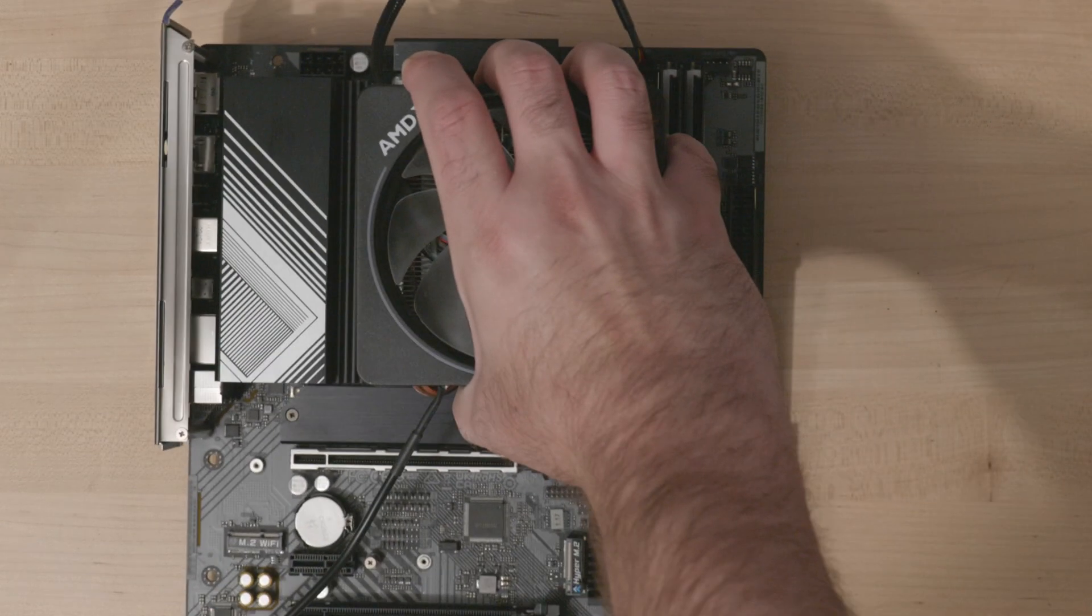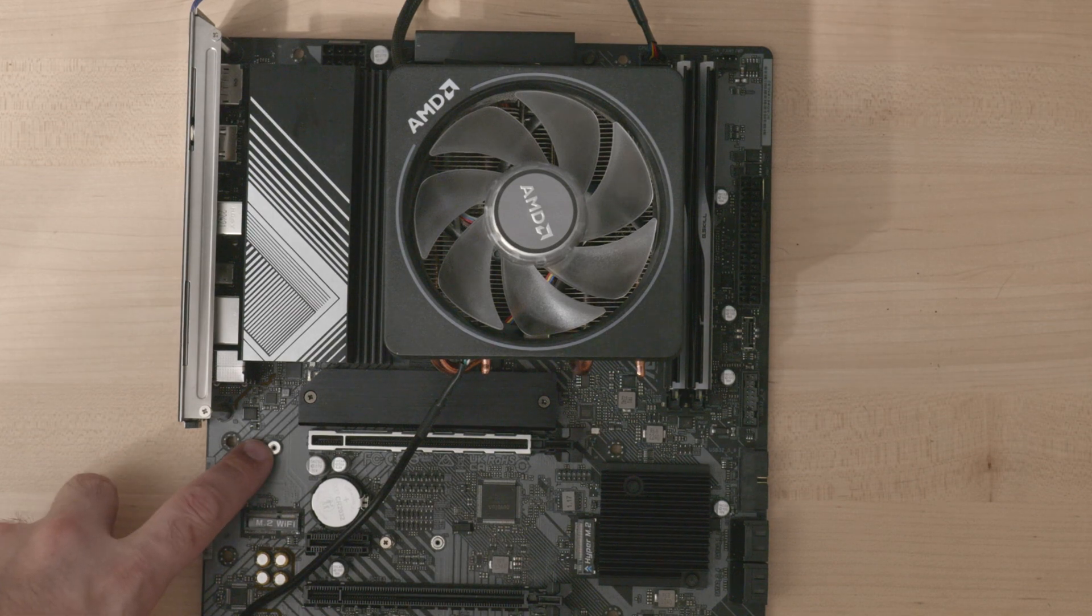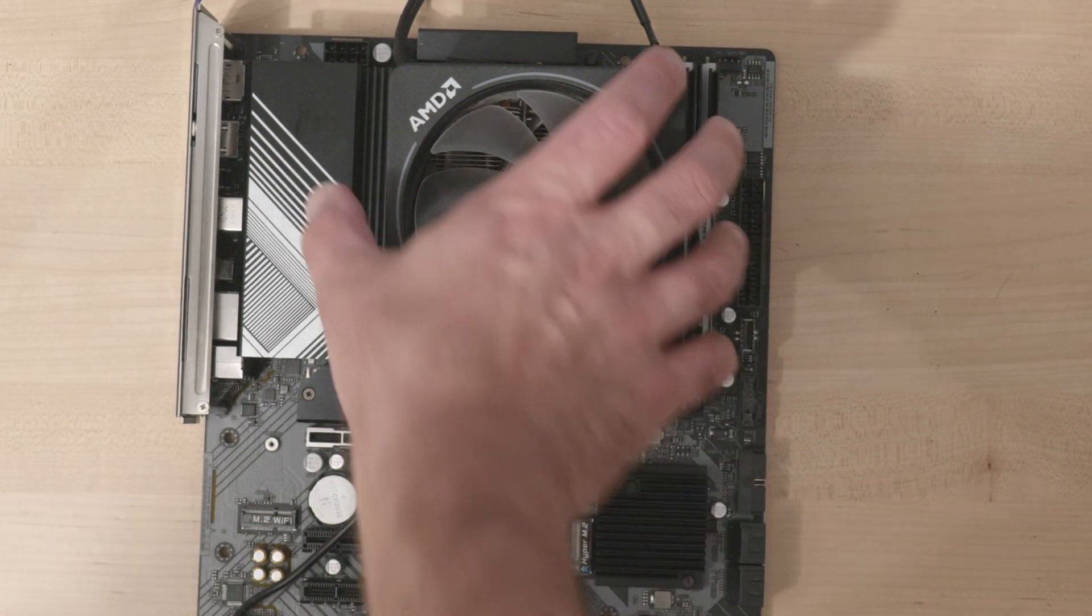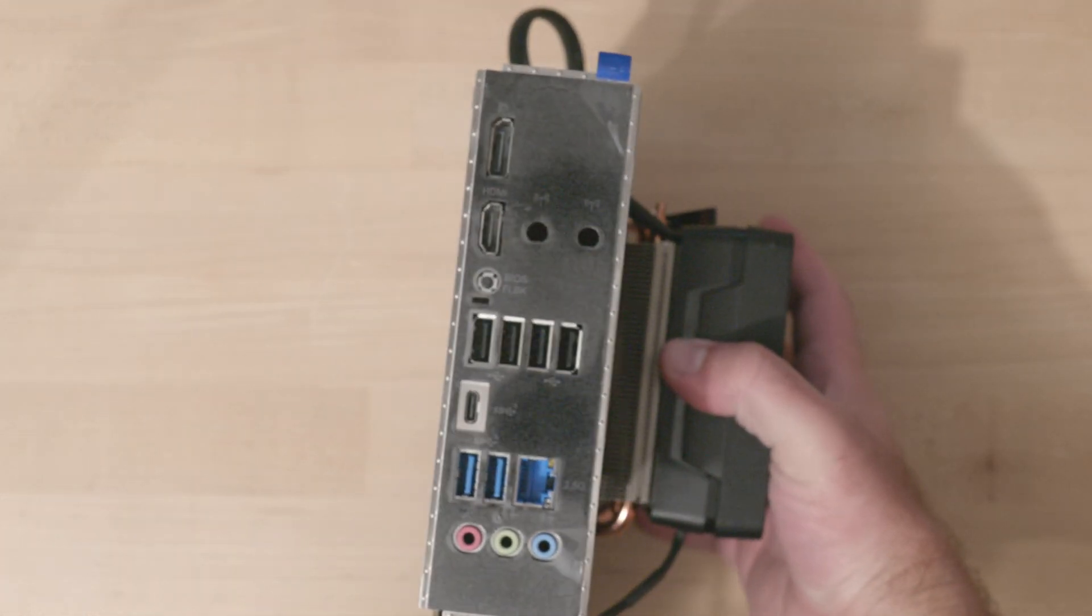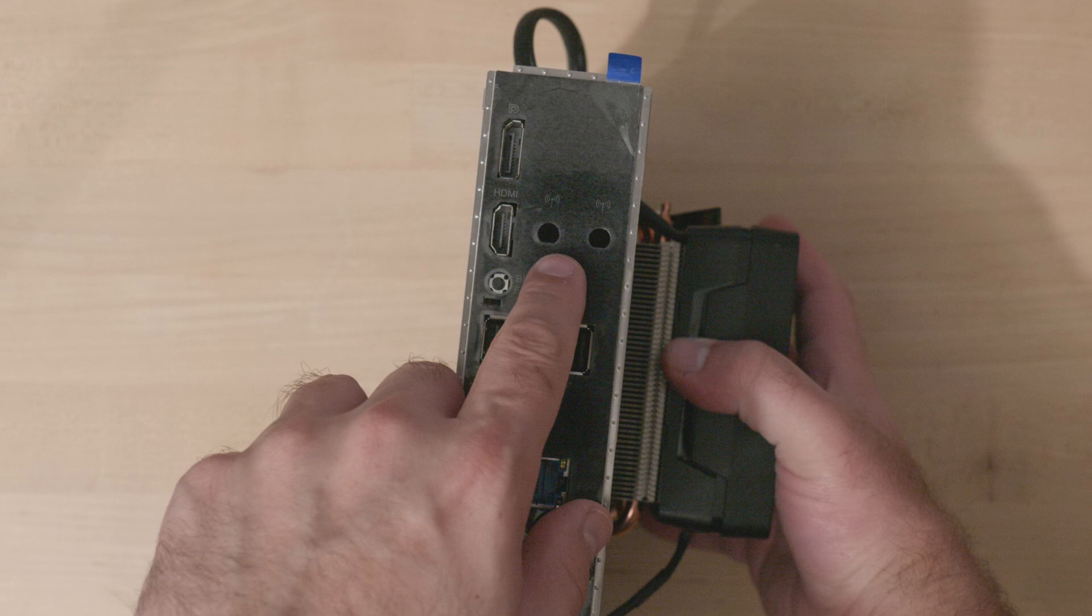This motherboard has a slot for an M.2 Wi-Fi card, but it didn't come with a card. In order to add Wi-Fi to this board, you need to buy a kit that will allow you to connect the antennas to the outside of the case once the motherboard's installed. That's what I'm going to do today in this video.